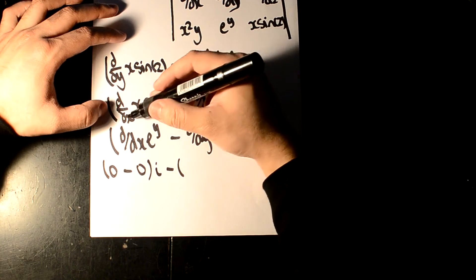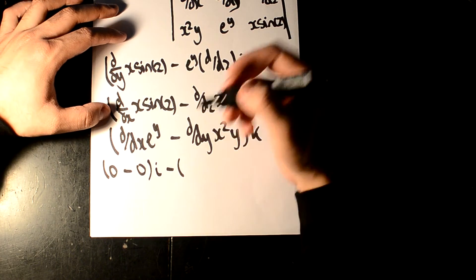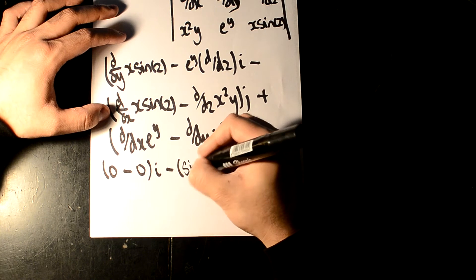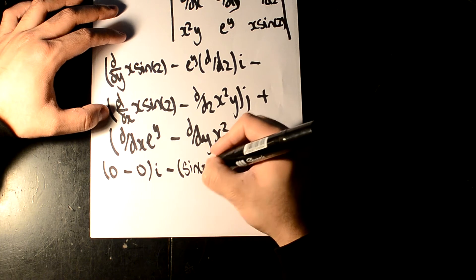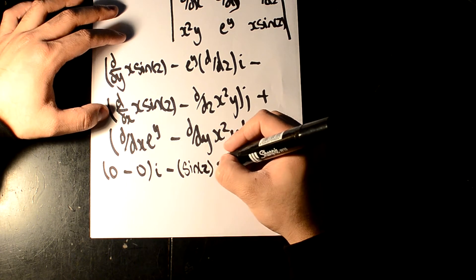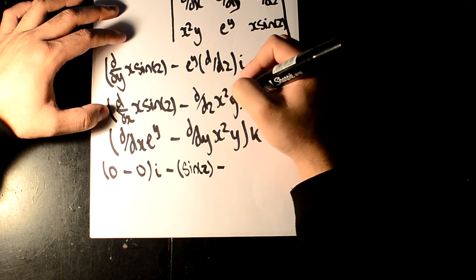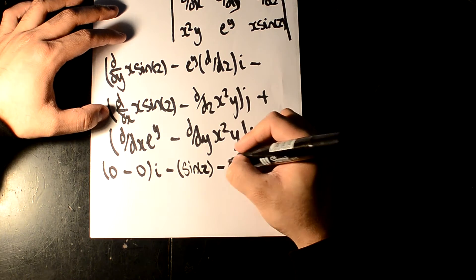Let's go to j. Again, d dx, we can see there's an x there. It's going to be sine z. No z terms here, differentiates into nothing. j.